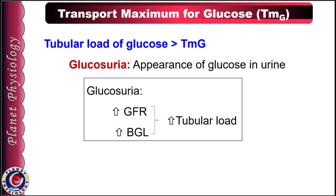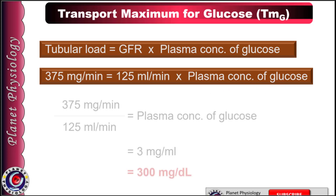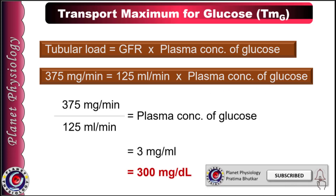Let's find out how much the blood glucose level should be to achieve a tubular load equal to TMG if GFR remains 125 ml per minute. Substituting the values: we want tubular load to be 375 mg per minute, GFR is 125 ml per minute. So 375 ÷ 125 gives plasma glucose concentration of 3 mg per ml, which converts to 300 mg per deciliter of blood.